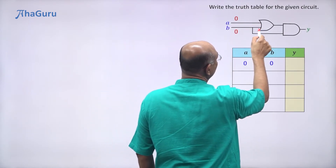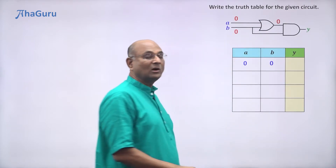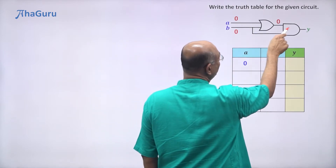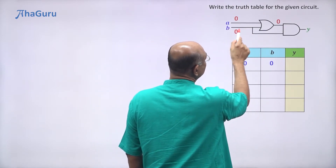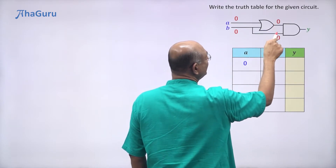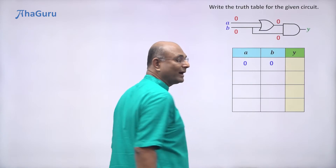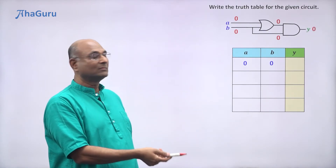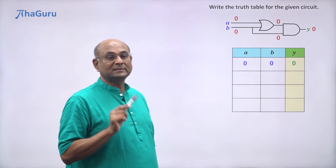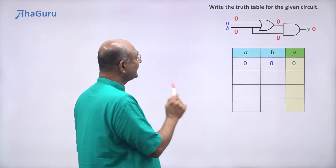A=0, B=0. This input is zero, this input is zero. Zero plus zero — because there's an OR gate — the output of the OR gate is zero. That becomes the input of the AND gate, and B branches in as also zero. Zero AND zero is zero, so Y is zero when A and B are both zero.